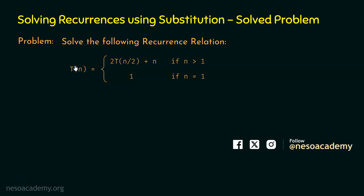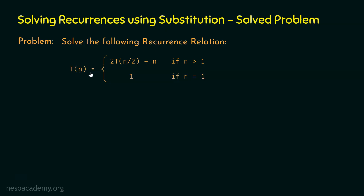T(n) = 1 represents the base case, and T(n) = 2T(n/2) + n represents the recursive case, where n is greater than 1. We have the recurrence relation and we need to solve it using the substitution method.